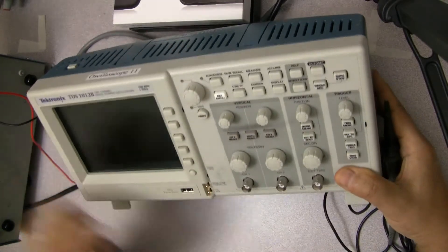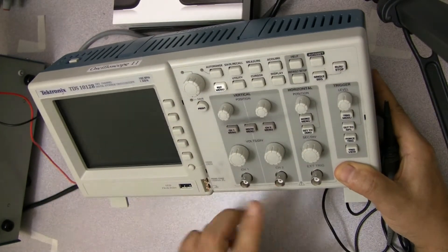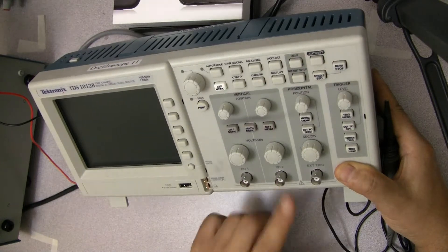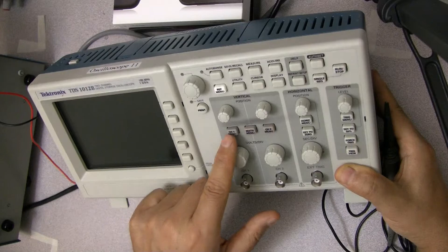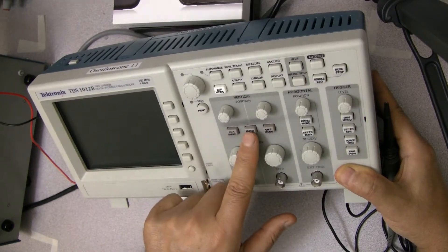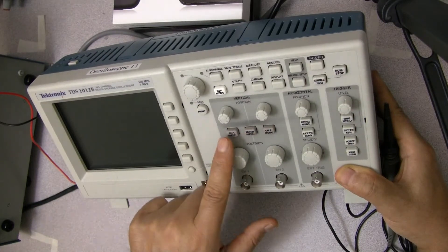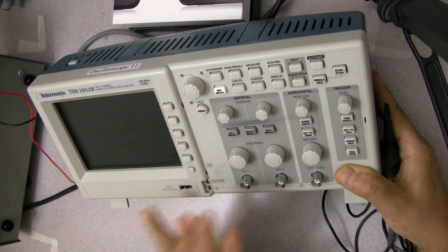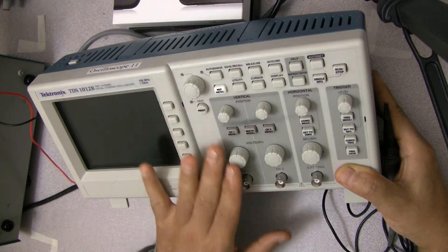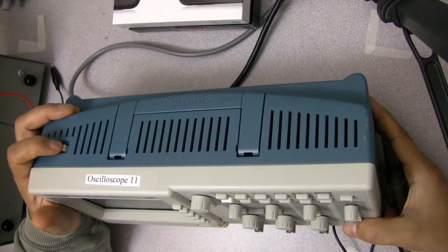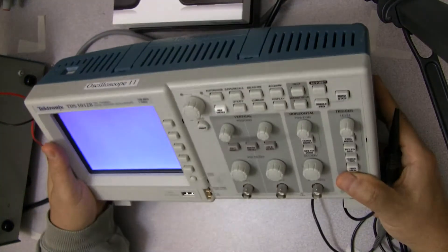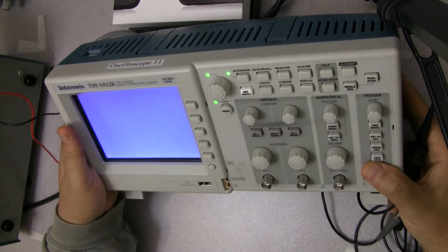The scopes have slight variation to each other, but they're fundamentally the same. This particular scope has multiple channels—this one has two channels, channel one and channel two, so you can look at two signals at the same time. You can compare them, you can add them, there's a whole math menu attached to it. For this video, we're going to focus on how one channel works. Turn the device on, and then we're going to wait for it to come up.